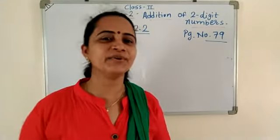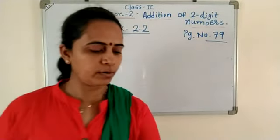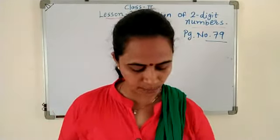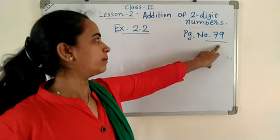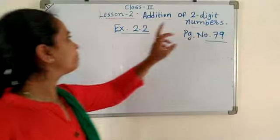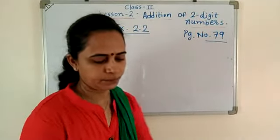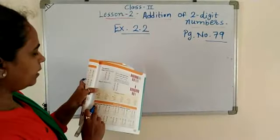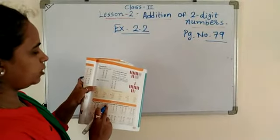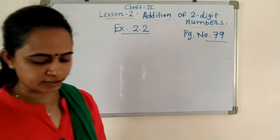Hello children, how are you? Okay, now open your textbook, open your maths textbook, page number 79. Open your textbook, page number 79, exercise 2.2. Okay, in exercise 2.2, read, regroup the ones into tens and add the following numbers.